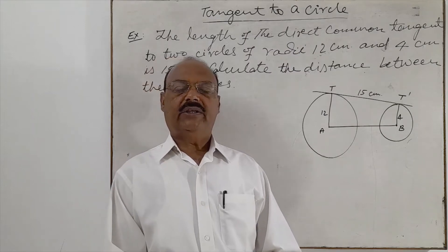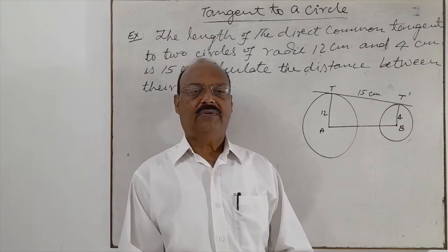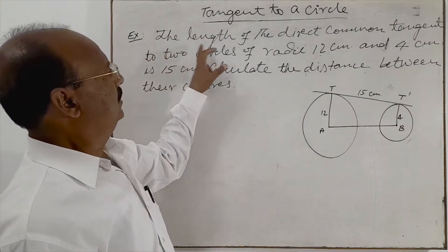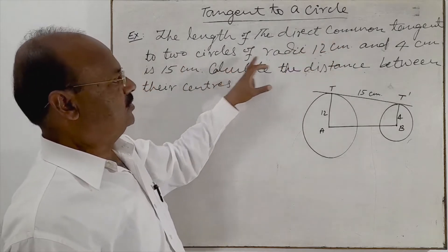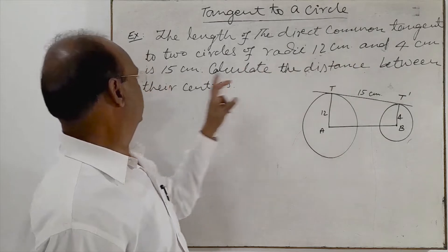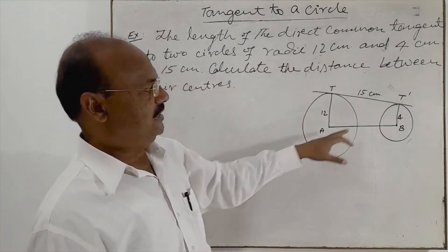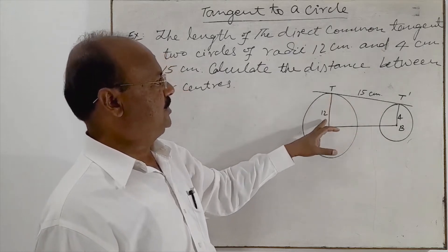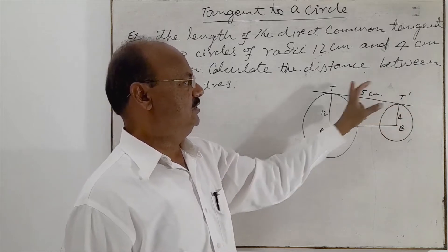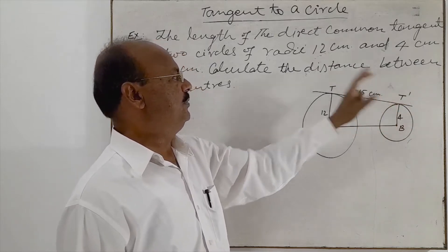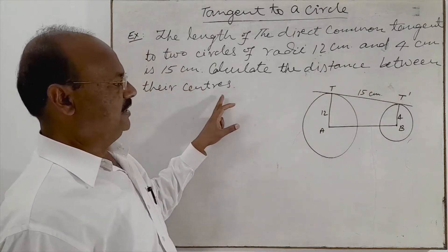In this video we are going to discuss a question from the topic tangent to a circle. The question is: the length of the direct common tangent to two circles of radii 12 centimeter and 4 centimeter is 15 centimeter. Two circles are shown with radii 12cm and 4cm, and the length of the common tangent TT' is 15 centimeter. We have to calculate the distance between their centers.